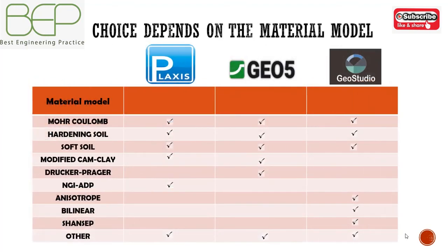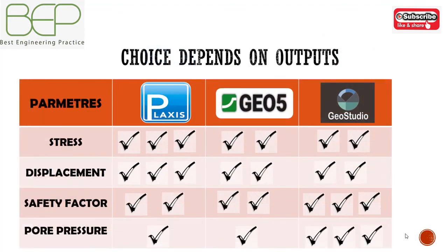Another factor is the material model. There are many material models, and not all of them are supported by all software tools. So depending on the material model needed, you can make your software choice. Regarding outputs — depending on what data you need at the end, you can make your choice. Plaxis is very useful when you want to get stress and displacement results. For safety factor analysis, GeoStudio is better, and for pore pressure analysis, GeoStudio is also better — though the Plaxis Flow module is also good for pore pressure analysis.